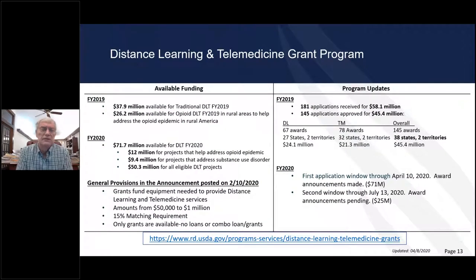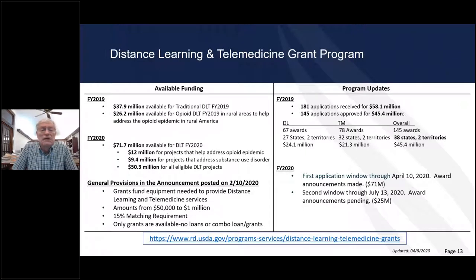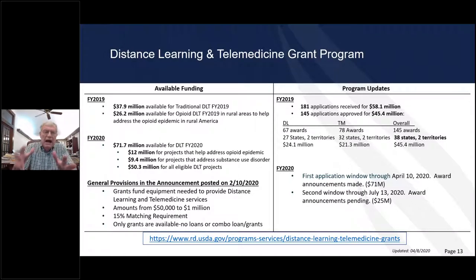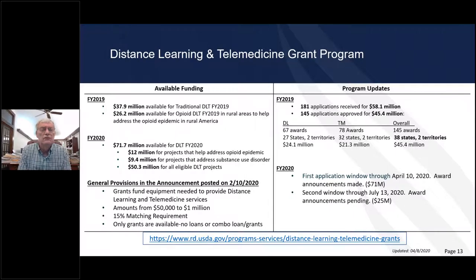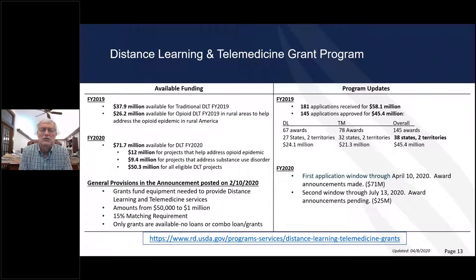Now here's what you came to hear about today: distance learning and telemedicine. In 1994, Congress gave the Rural Utility Service an amount of money — for a number of years it was $25 million a year for distance learning and telemedicine. They did not specify exactly what the program was to be used for. Rather than putting the program into a box, the agency said: define what issues there are in rural areas, and you tell us how you can satisfy these needs through distance learning and/or telemedicine projects. As a result, we have a whole variety of projects in rural areas.